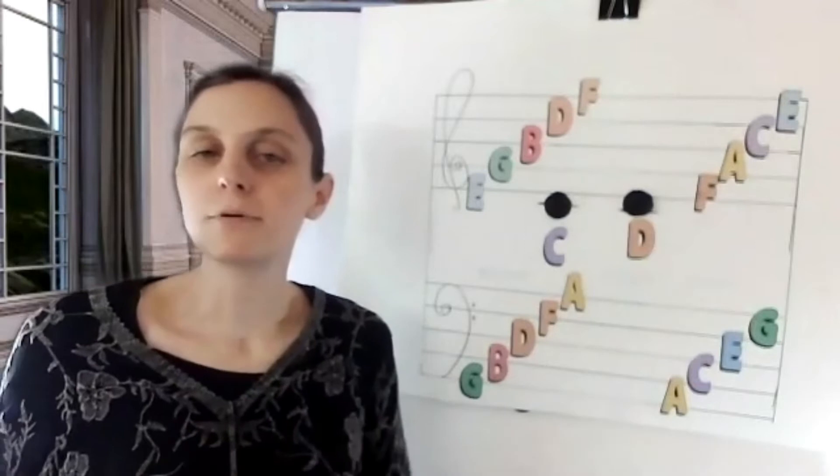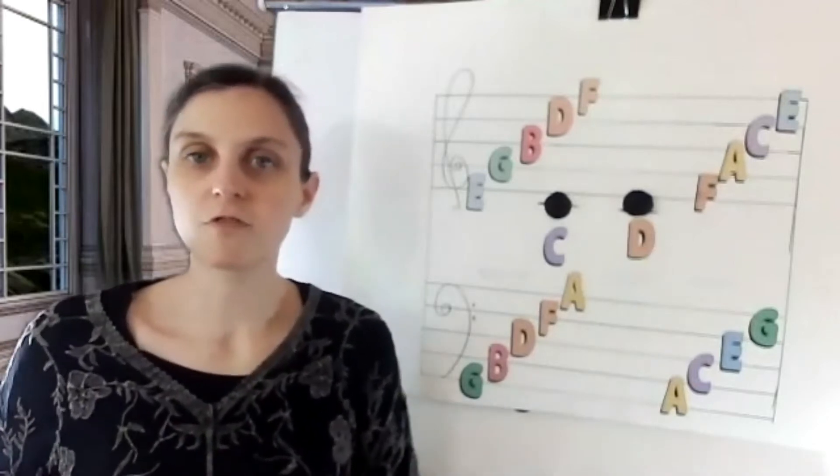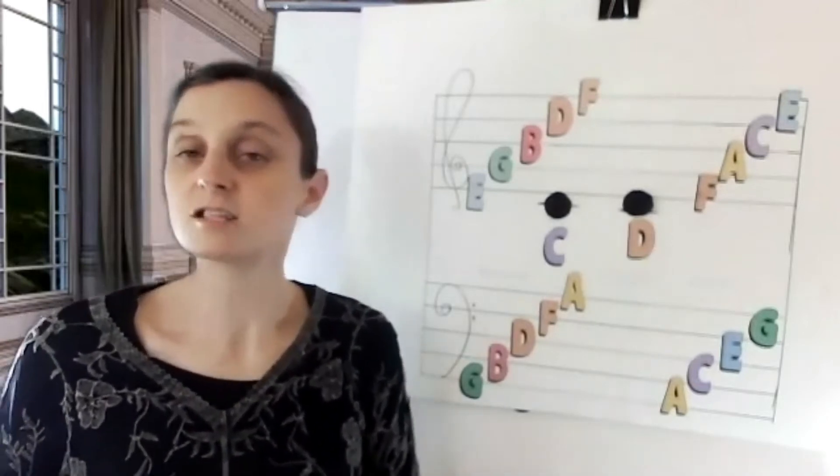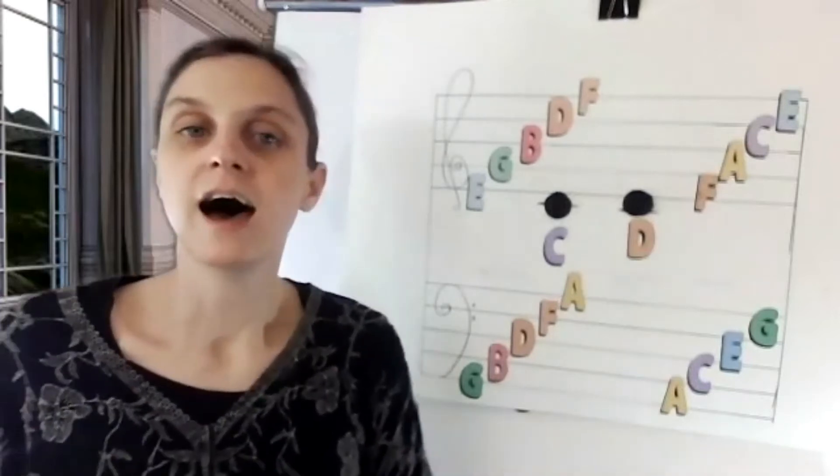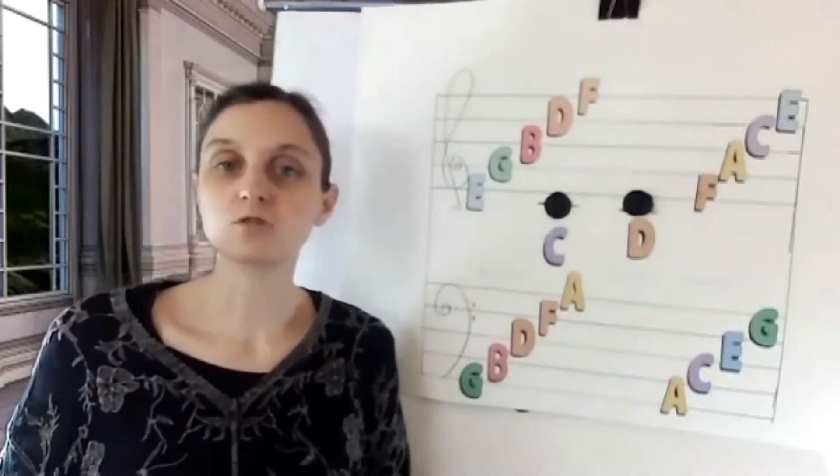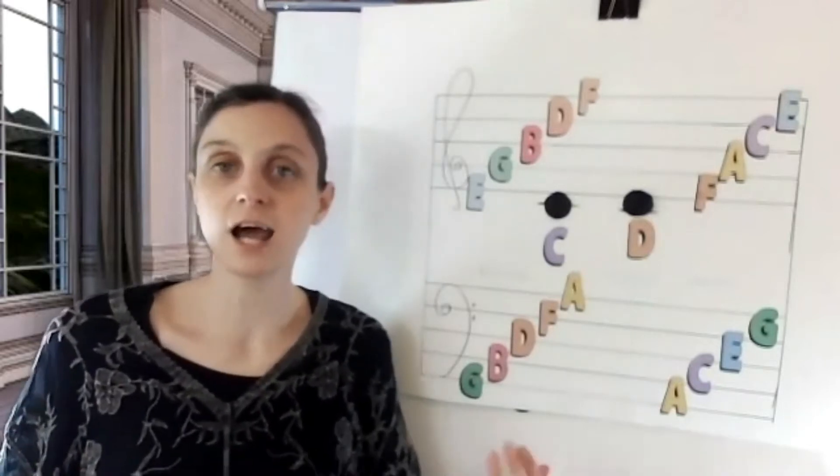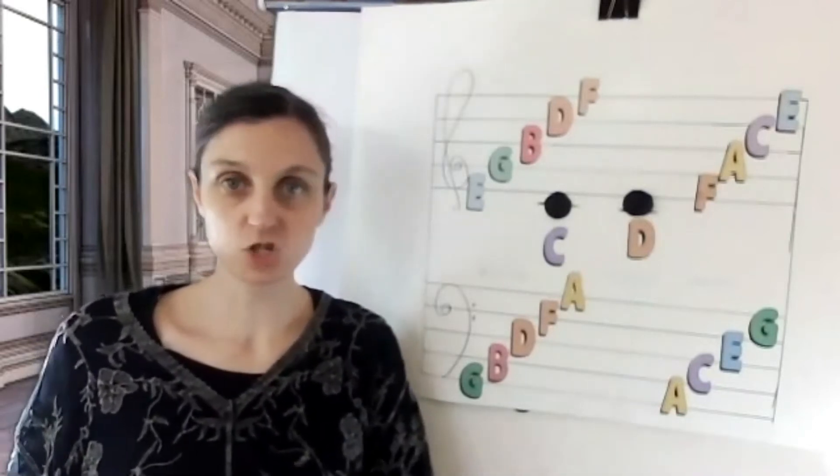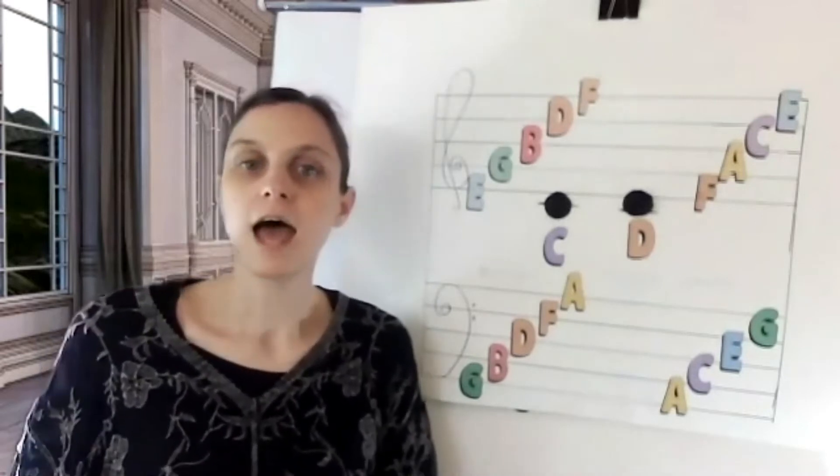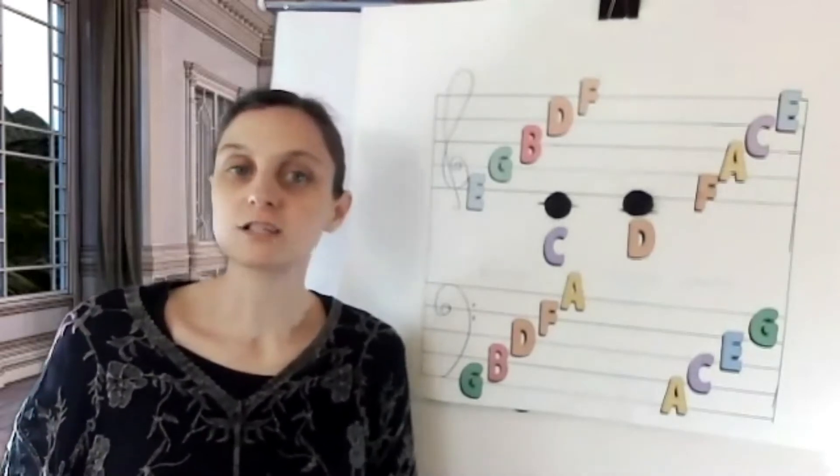Now there is a completely different way to remember the lines and the spaces. It's called the C method. I did a previous video where I showed how to read on the treble staff with every good boy does fine, face, and the C method just for the treble staff. And today we're going to tie it all together.